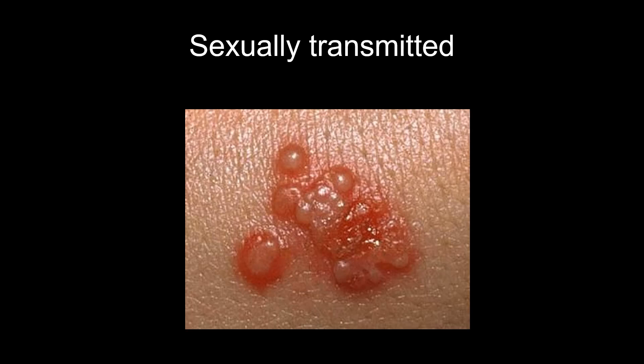Sexual transmission means you touched someone in their genital region and ended up with a virus. Examples include herpes simplex virus type 2, which causes genital herpes with initial red bumps; herpes simplex type 1, which causes cold sores around the mouth; HIV (human immunodeficiency virus); and HPV. There are several viral STDs.